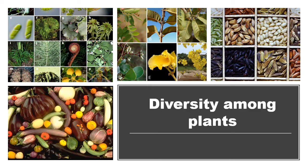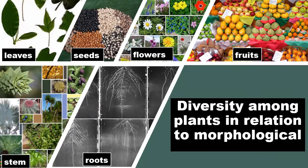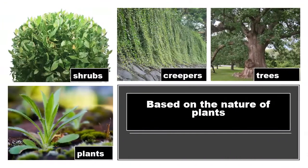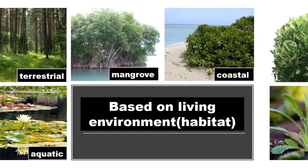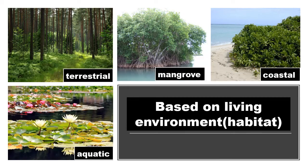Diversity among plants. Plants show diversity in relation to morphological features such as leaves, seeds, flowers, fruits, stem, and roots. Based on the nature of plants, they can be classified as shrubs, creepers, trees, and plants. Based on living environment, they can be terrestrial, mangrove, coastal, or aquatic.